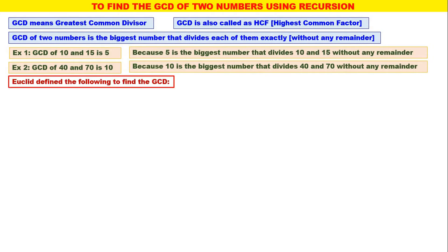Now, Euclid defined the following to find the GCD. This is also called as Euclid's rule or Euclid's formula. GCD of M, N is equal to: if N is 0, then M is the GCD. So whenever the second parameter is 0, the first parameter is the GCD.